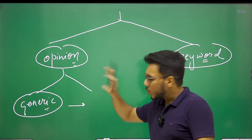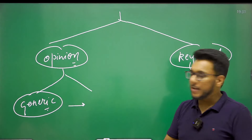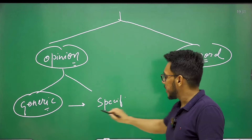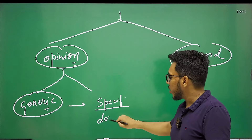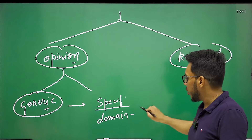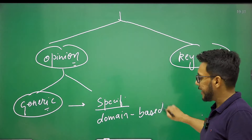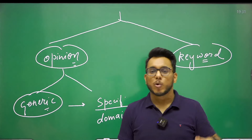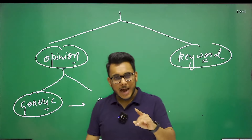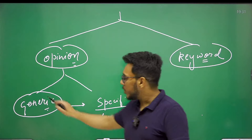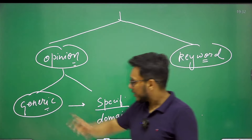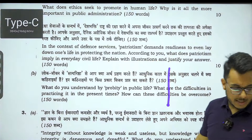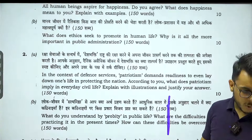Then there are questions in the opinion-based category where more specific domain-based knowledge is needed. If we go back to the initial days, that is 2014–15, we find that opinionated questions tended to be more generic. Let me show you. Here on the screen I am showing GS Paper 4, 2014.